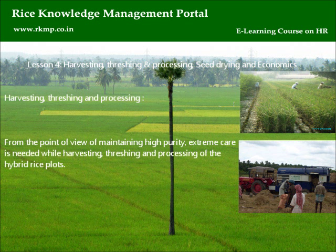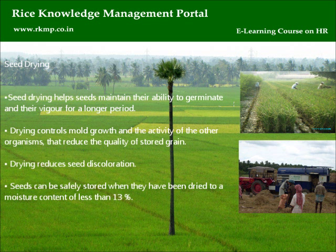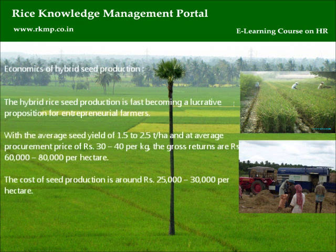Lesson 4: Harvesting, Threshing and Processing, Seed Drying, and Economics. From the point of view of maintaining high purity, extreme care is needed while harvesting, threshing, and processing of the hybrid rice plots. Seed drying helps seeds maintain their ability to germinate and their vigor for a longer period. Drying controls mold growth and the activity of other organisms that reduce the quality of stored grain. Drying also reduces seed discoloration. Seeds can be safely stored when they have been dried to a moisture content of less than 13%.